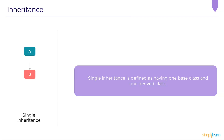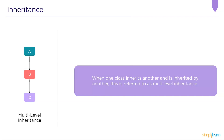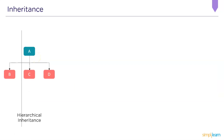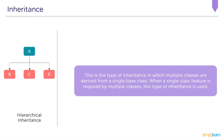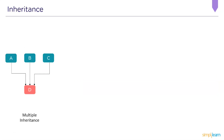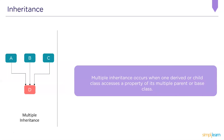Single inheritance has one base class and one derived class. Multi-level inheritance is when one class inherits another, and that class is also inherited by yet another — C inherits from B, B from A, so C can also access A's properties via B. Hierarchical inheritance is when multiple classes are derived from a single base class. Multiple inheritance occurs when one derived class accesses properties of multiple parent or base classes.